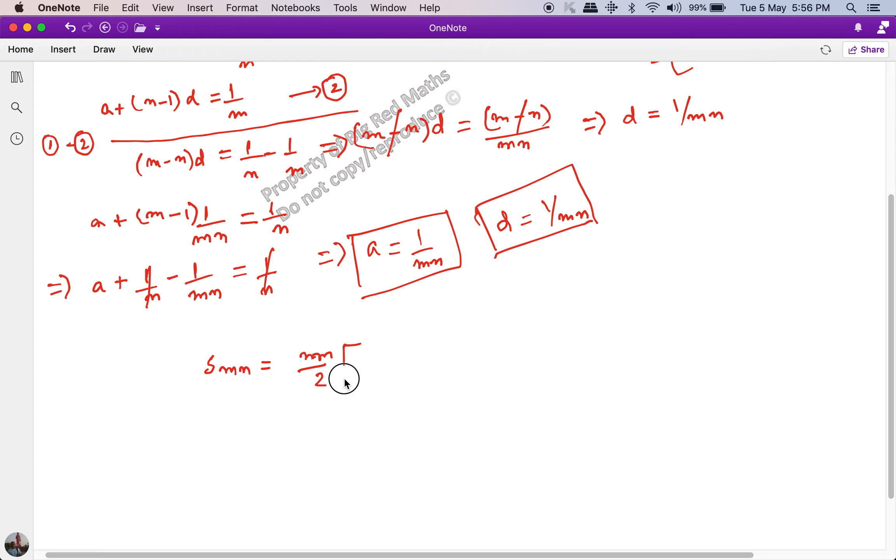So we have to find s of mn will be equal to mn by 2 multiplied by 2a plus (mn minus 1) multiplied by d. And if I multiply this thing out, what I get is mn by 2.